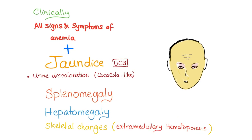Now let's talk clinically. What is the difference between intravascular and extravascular? Usually they are the same. All signs and symptoms of anemia: pale, tired, extreme fatigue, dizziness, shortness of breath, dyspnea on exertion, and exercise intolerance. Signs include murmur, pale conjunctiva, etc. Also jaundice — what type? Unconjugated hyperbilirubinemia, hemolytic jaundice, pre-hepatic jaundice. Urine discoloration — coca-cola-like urine.